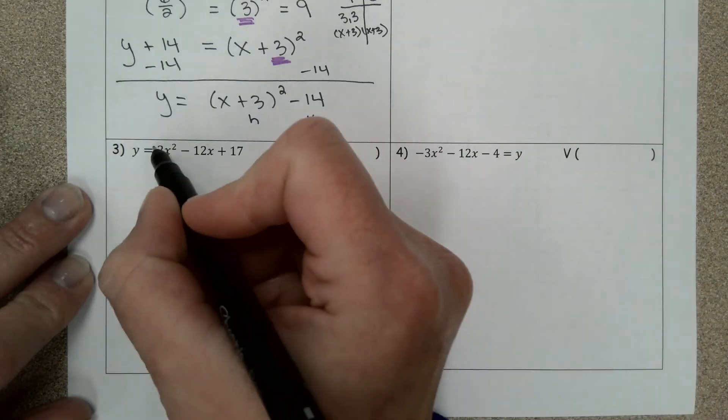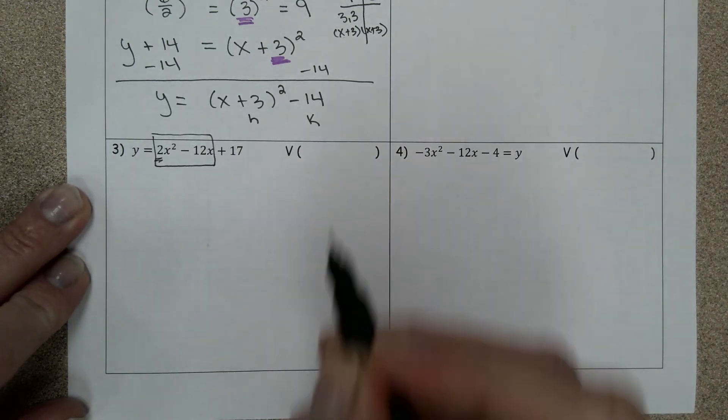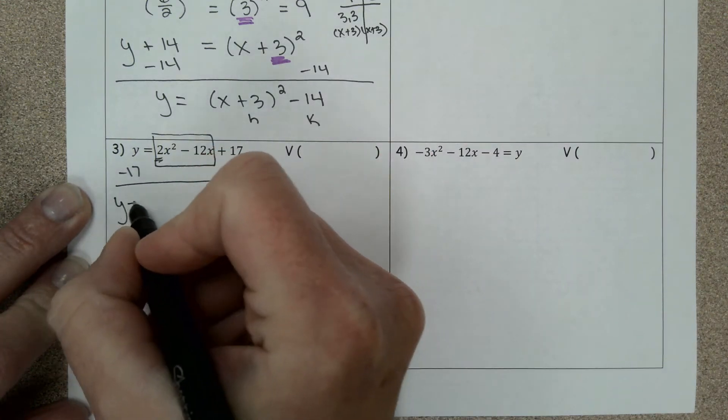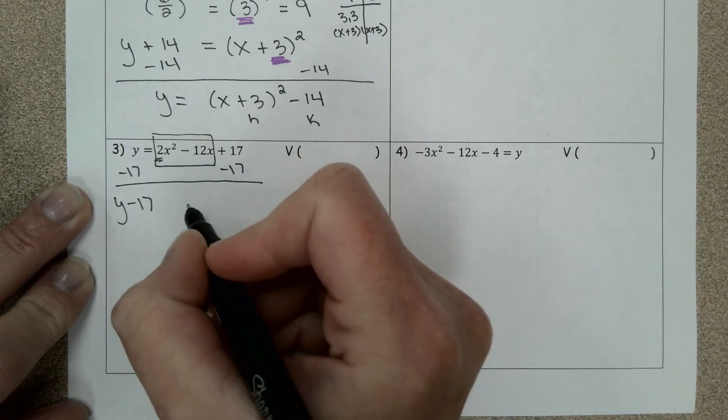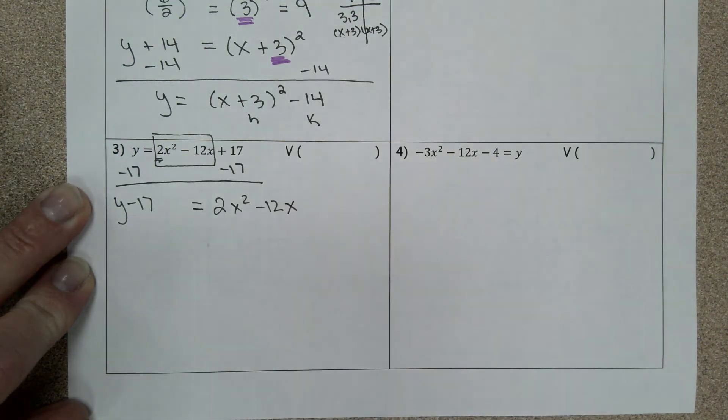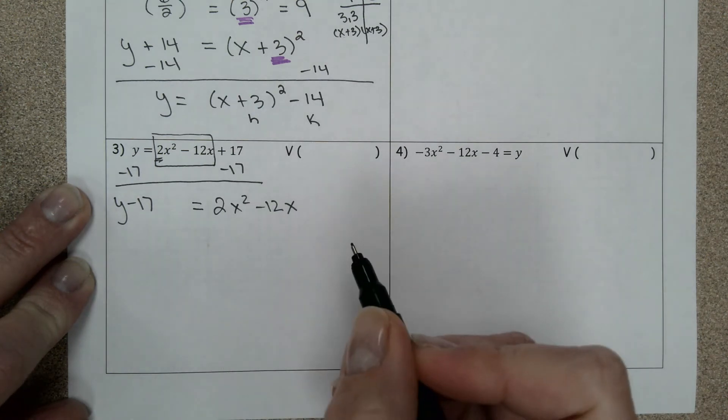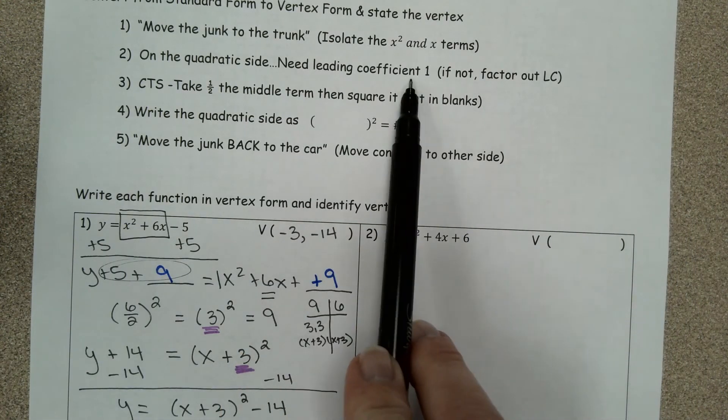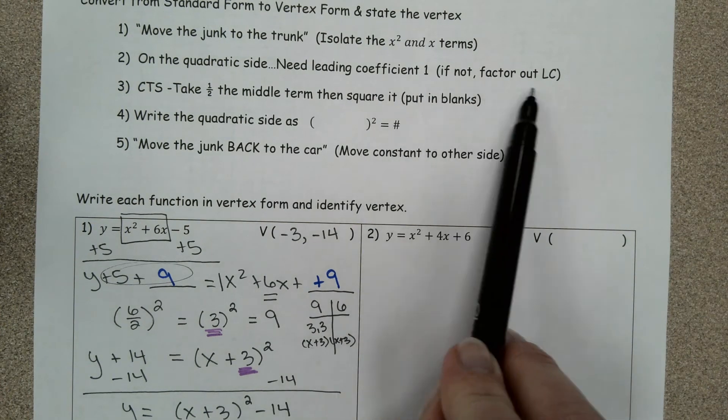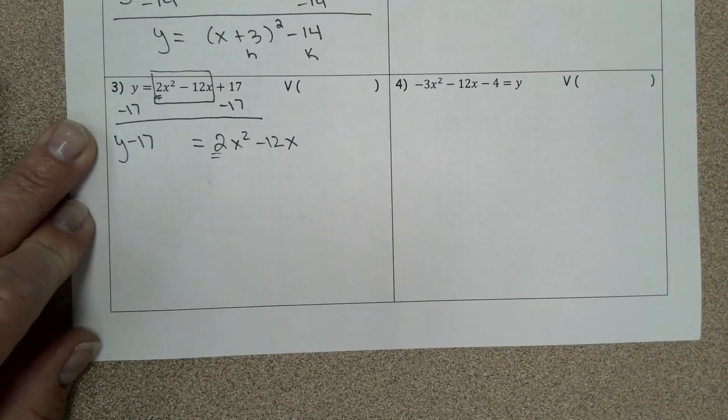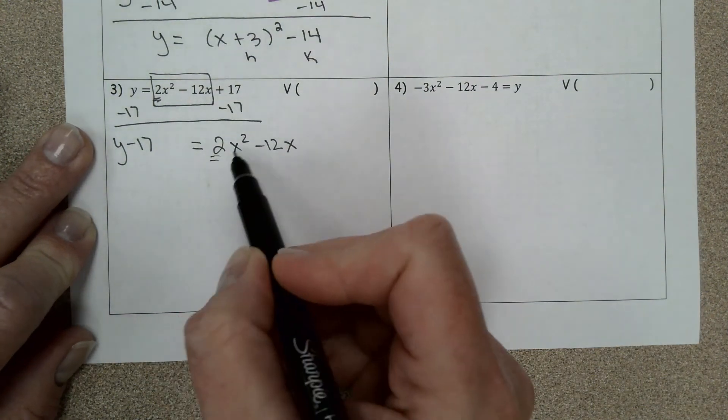Step number one, isolate your x² and x term, move the junk to the trunk. So that means subtract 17 to the other side. Step two, if it's not, factor out the leading coefficient. So leading coefficient is LC.